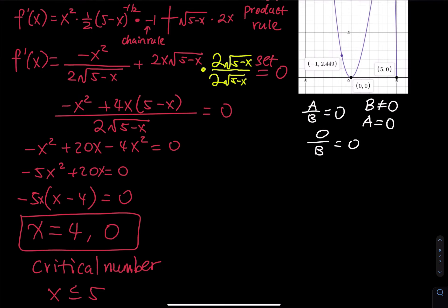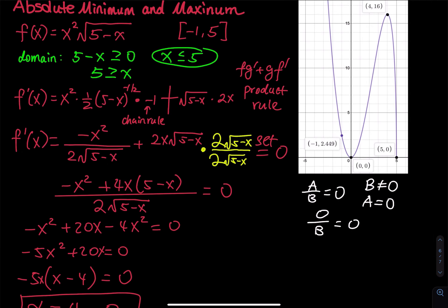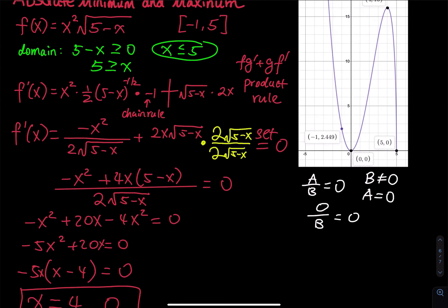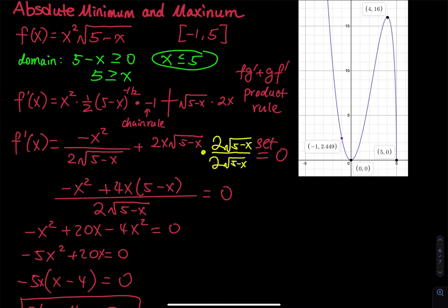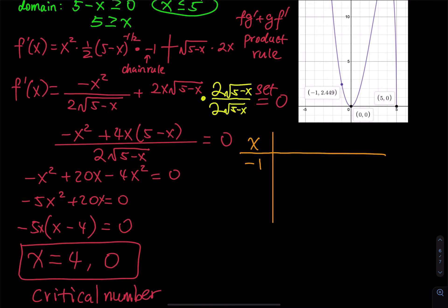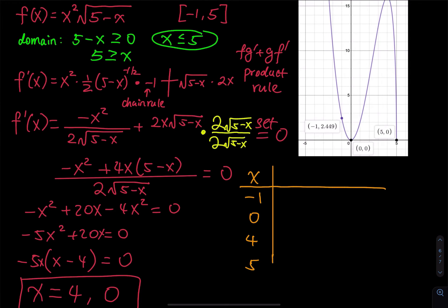Now we test the endpoints and critical numbers. We test x equals negative 1, 0, 4, and 5 by plugging each into f of x. When x equals 0, f of 0 equals 0 squared times square root of 5 minus 0, which equals 0.